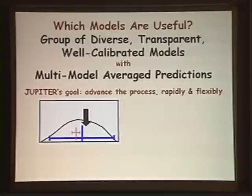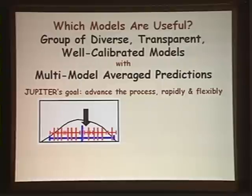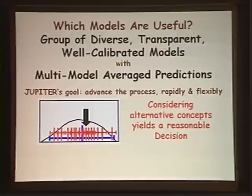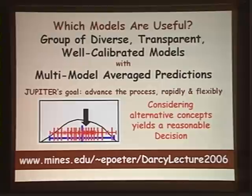I like to think of it as a well-functioning political system where each model represents a politician, and each politician has their own bias and their own narrow view of the world, but we get them all working together and pretty soon we reach a reasonable decision. On that optimistic note, I'll leave you with the website for the Darcy lecture. I'm happy to answer any questions, and I thank you so much for coming today.